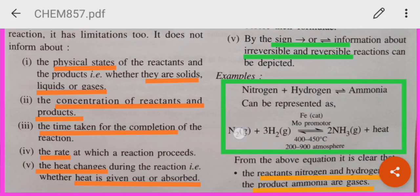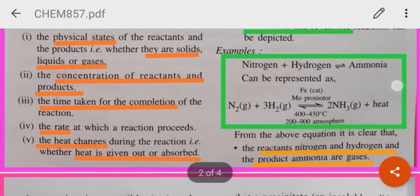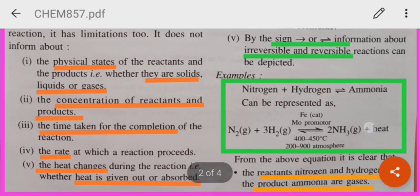Nitrogen reacts with hydrogen to give ammonia. One molecule of nitrogen reacts with three molecules of hydrogen to give two molecules of ammonia, and it is an exothermic reaction. Heat is given out.